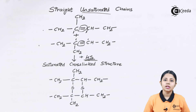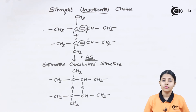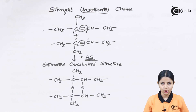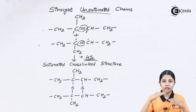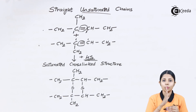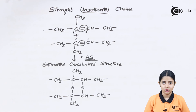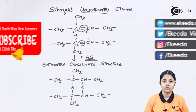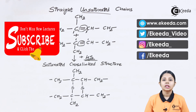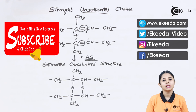So in today's session we studied what exactly is vulcanization of rubber, different kinds of vulcanizing agents, and how when two linear linkages come together they form a cross-bond — a cross-linked linkage — which is my vulcanized rubber. Thank you so much for watching this video. Stay tuned to eKida and subscribe to eKida.